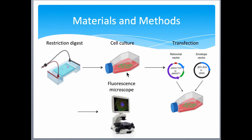Moving to materials and methods: the first step was restriction digest. We digested the PMIC E7 TCR and the PMIC OT1 using restriction enzymes EcoRI-HF and BamHI, to confirm the presence of E7 TCR or OT1 TCR within the vectors, which is essential for the experiment's validity. We then cultured the packaging cell line Phoenix ECO cells in complete medium, performed retrovirus packaging by co-transfecting the retroviral and envelope vectors into Phoenix ECO cells, and measured transfection efficiency after 48 hours using a fluorescence microscope by measuring GFP expression — since the retroviral vector contains a GFP insert as a reporter gene.